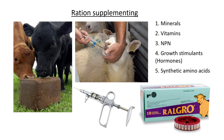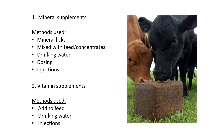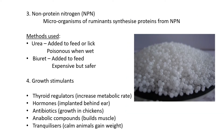If the animal isn't getting enough specific amino acids, those can be injected or added to feed. For mineral supplements, the methods are: a lick, mixed into concentrate feed, drinking water, dosing into the mouth, or injection. Vitamins can be added to feed, drinking water, or injected into the animal.